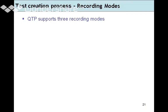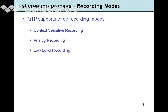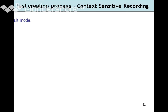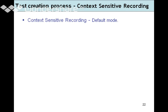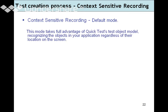In the test creation process, we will now look at the recording modes. QTP supports three recording modes: context sensitive recording mode, analog recording mode, and low-level recording mode. The context sensitive recording mode is the default mode when you launch QTP — you don't have to select it; it will be in context sensitive recording mode by default.